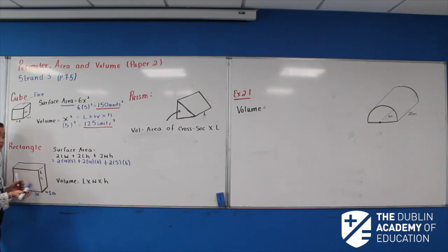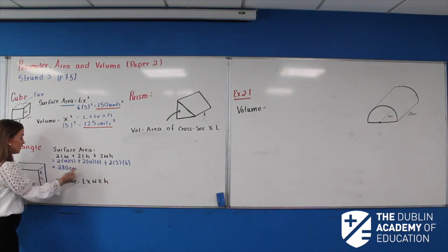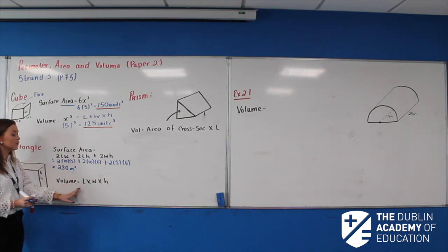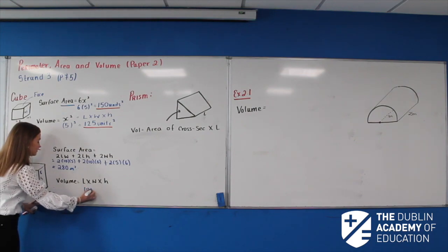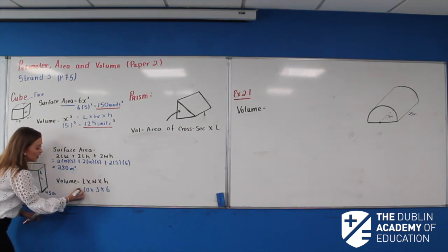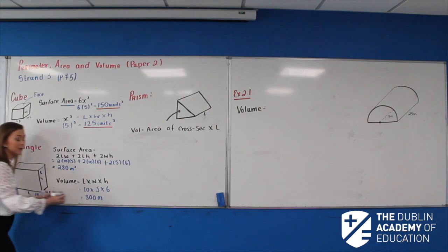This formula isn't given to you, so plug it straight into your calculator. 2×10×5 plus 2×10×6 plus 2×5×6 gives 280 metres squared. That's the surface area. For volume: length times width times height — 10 times 5 times 6 gives 300 metres cubed. And because it is volume, it's cubed.